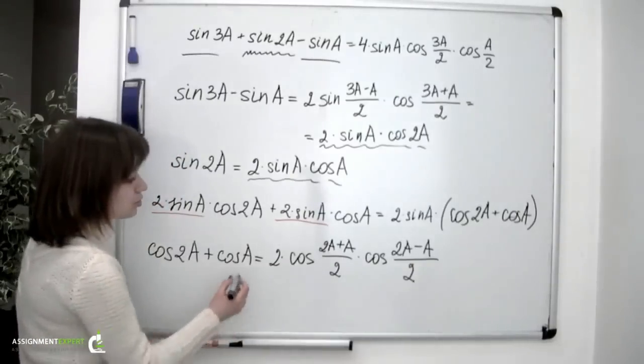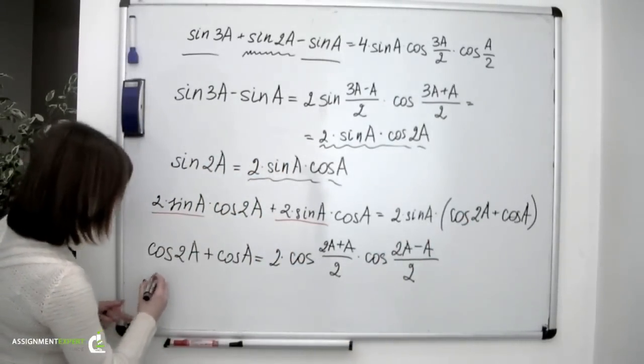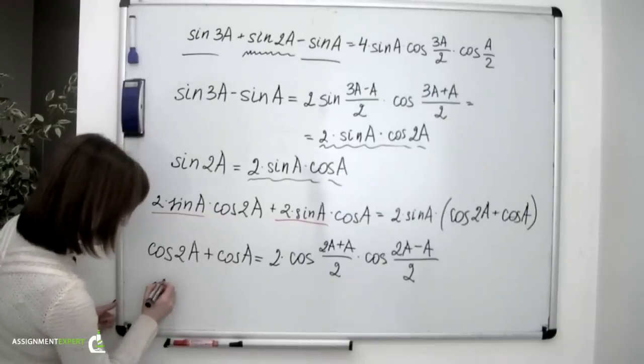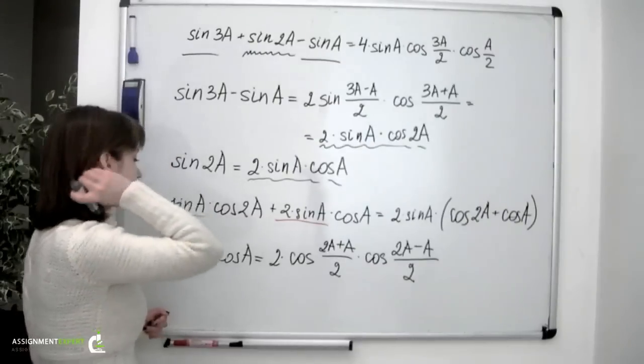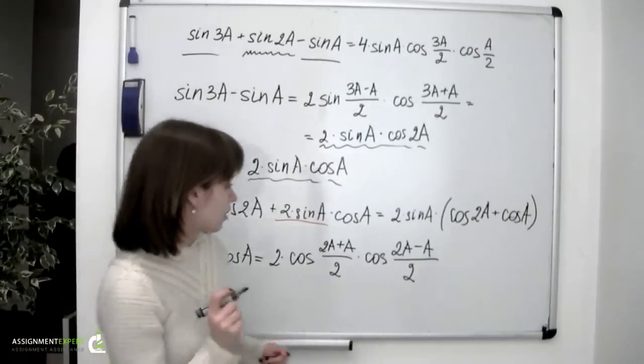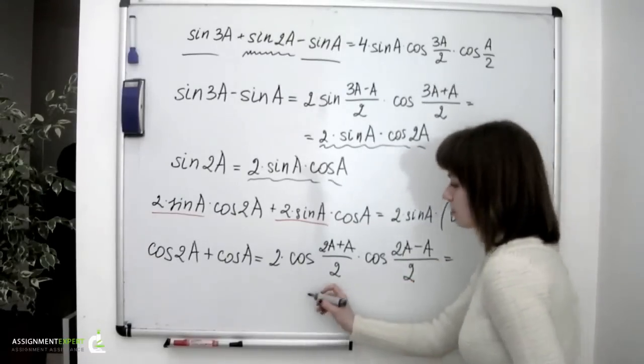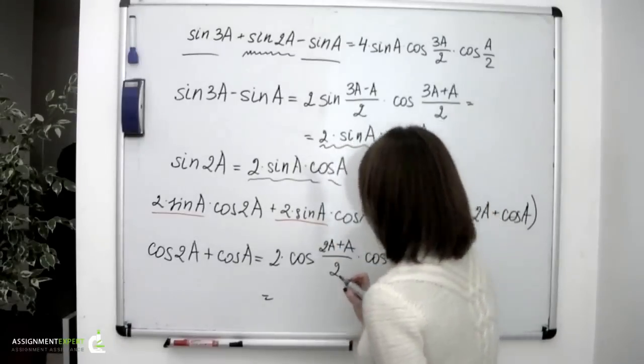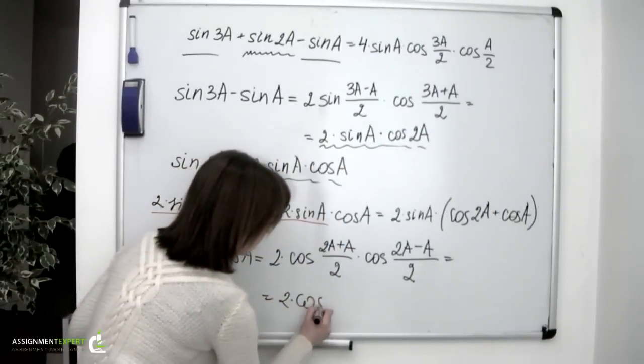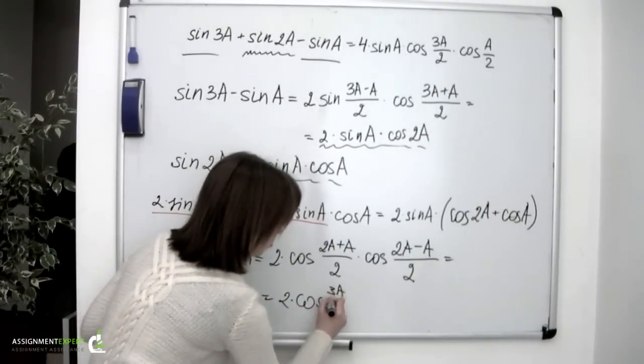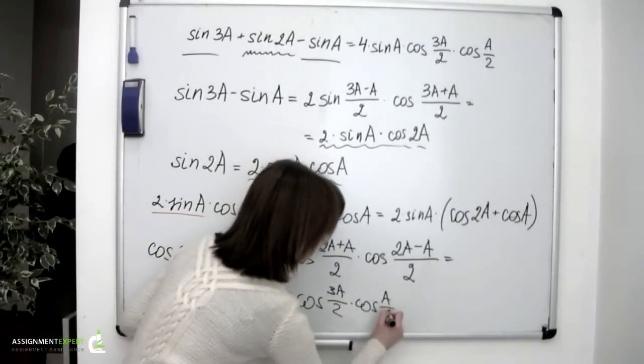Let's now substitute this expression into the previous one and see what happens. We can simplify it a little bit. 2 times cosine 3a over 2 times cosine a over 2.